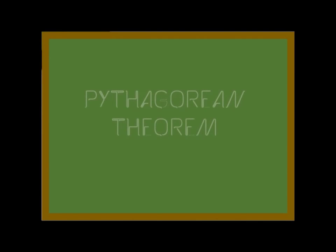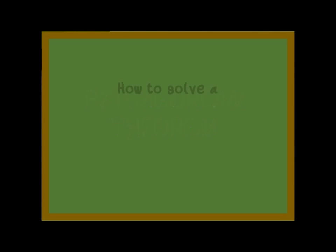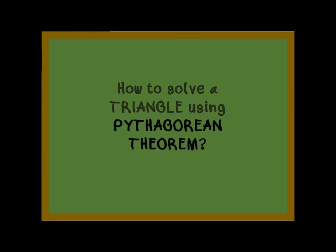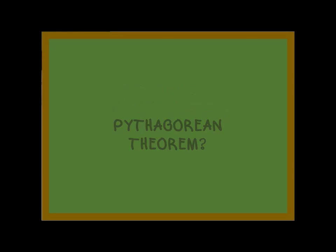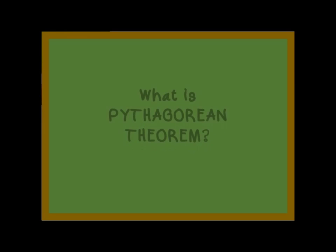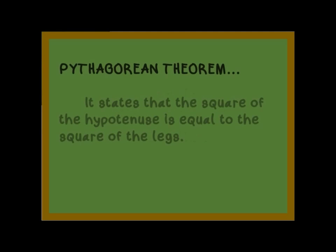Our lesson for today is about the Pythagorean theorem. We are about to discuss how to solve a triangle using the Pythagorean theorem. But first, what is the Pythagorean theorem? It states that the square of the hypotenuse is equal to the sum of the squares of the legs.